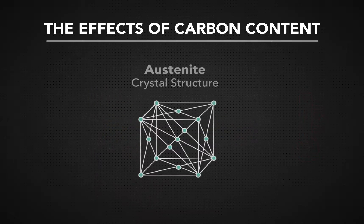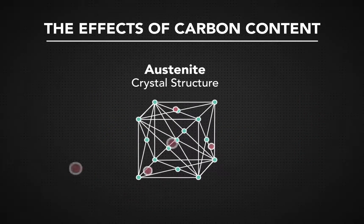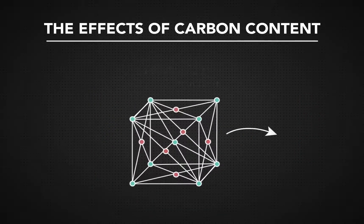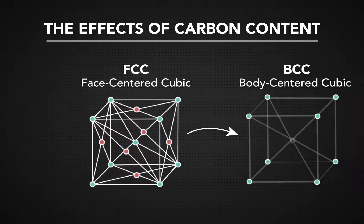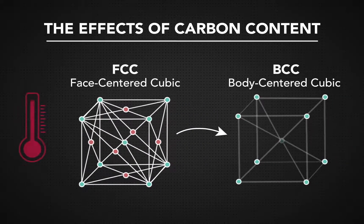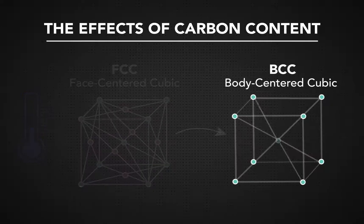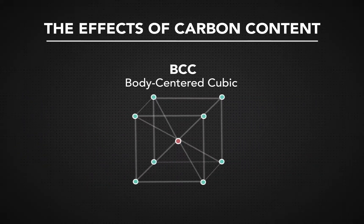Austenite steel's crystal structure has gaps that store carbon. The FCC structure changes to a BCC structure when the steel eventually cools down. The ferrite steel's BCC crystal structure has fewer gaps that can store carbon.